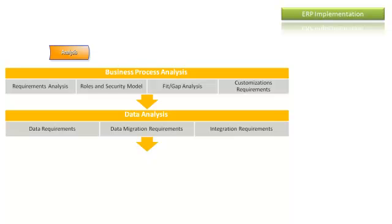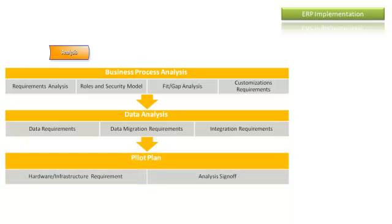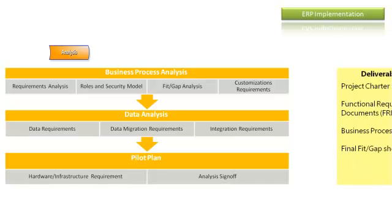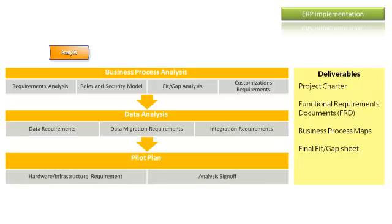We then move to data analysis. The consultant analyzes the customer's data requirements, mainly representing reporting requirements and data migration needs — identifying what master data will be migrated from the legacy system, the mapping requirements, the migration approach for opening balances, and required data cleansing. Integration requirements consist of two parts: internal integration between modules and sub-modules, and external integration with other applications, identifying integration points and flow. Then hardware and infrastructure requirements are prepared based on business process operations, expected number of users, organizational structures, and locations.